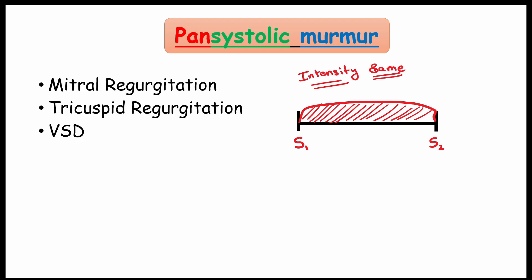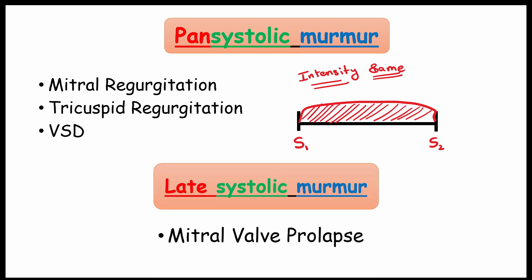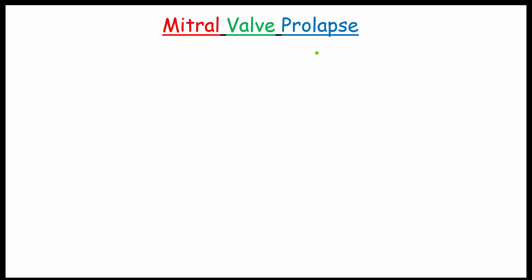Now, let's move to late systolic murmur. We see this murmur in mitral valve prolapse. Let's see the normal structure of the mitral valve. The valve is attached with the chordae tendineae and the chordae tendineae is attached with the papillary muscles.